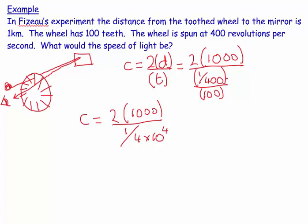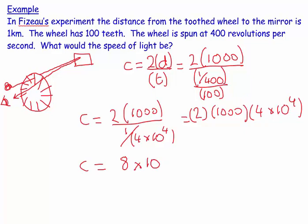Dividing by 100 means it's smaller, so it's 1 over 4 times 10 to the 4, which equals 2 times 1000 times 4 times 10 to the 4. So speed, according to this experiment, would be 8 times 10 to the 7 metres per second.